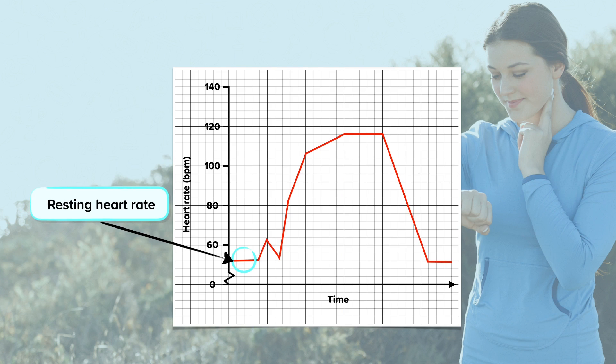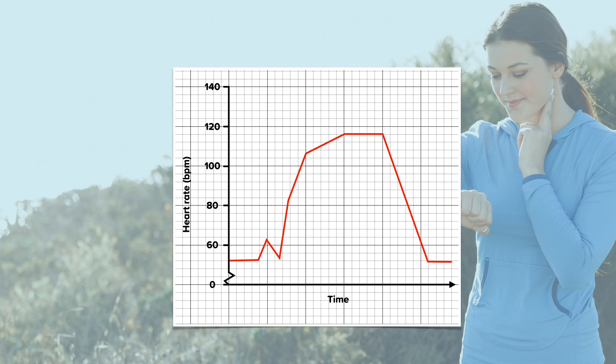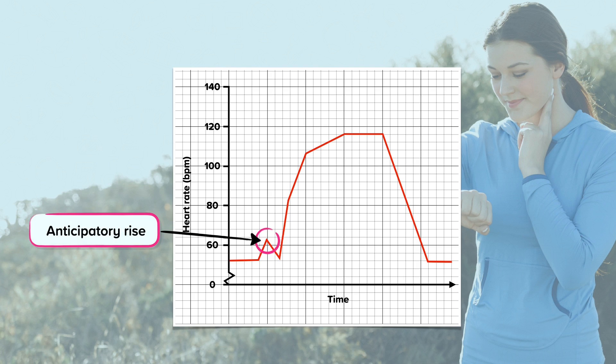Just before exercise starts you will notice that the heart rate increases slightly from resting. This is called an anticipatory rise. Heart rate increases prior to exercise due to adrenaline being released as the mind knows the body is about to start exercising.